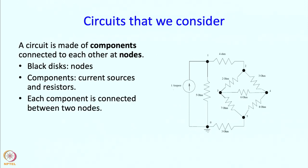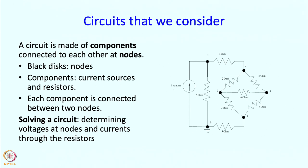Each component is connected between two nodes. As you can see, current sources are connected between two nodes — we have a resistor and also a current source between these two nodes, and between these two nodes we have another resistor. When we say solving a circuit, we mean determining the voltages at the different nodes, because current flowing through these components will produce voltages or potentials at the nodes. So solving means figuring out what are the currents and voltages in the circuit.